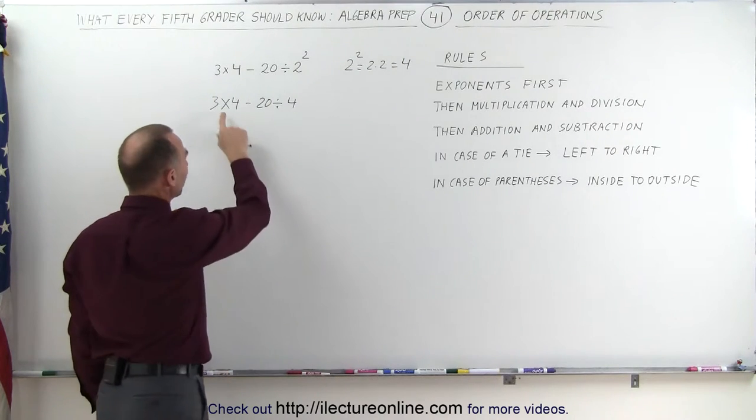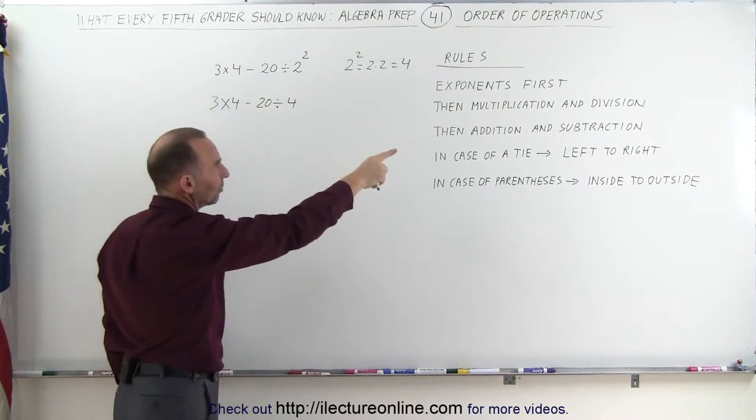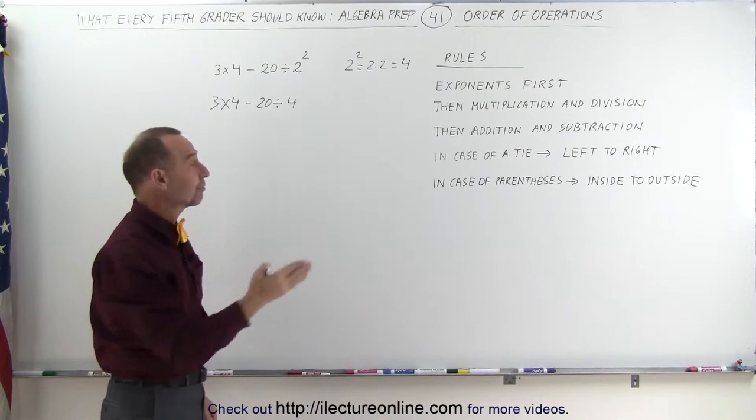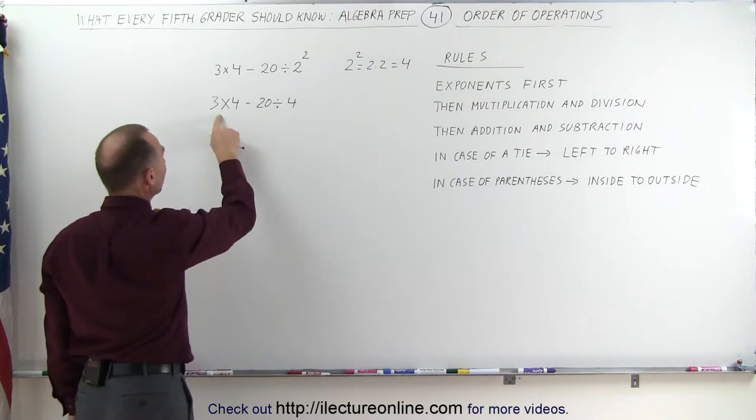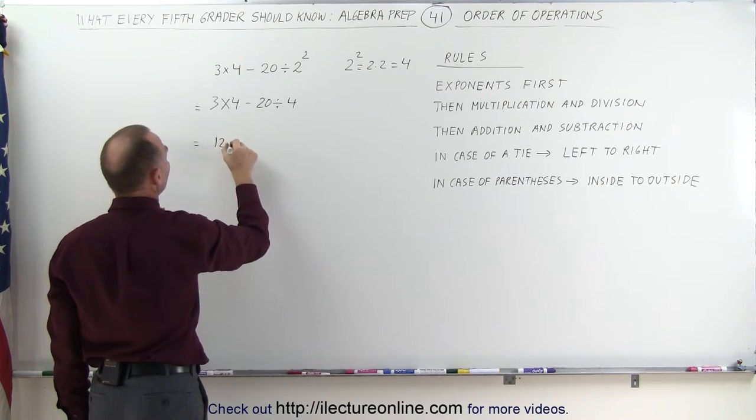Now we have it down to where there's one multiplication, one division, and a subtraction. The rule says we want to do multiplication and division before we do addition and subtraction. And we want to work from left to right. So first we do this one. I'll put an equal sign there. This is equal to 3 times 4, which is 12,